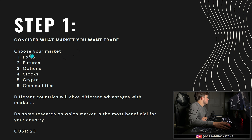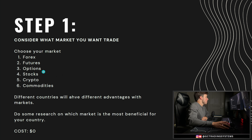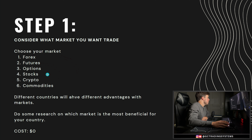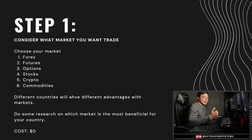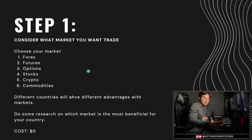There's a ton of different markets to choose from. You can choose Forex, futures, options, stocks, crypto, commodities, and there's a bunch more. One thing to note is that different countries will have different advantages with markets. If you are in the United States, you can pretty much trade all of these and be fine. But if you are trading out of India or something, you might only have access to Forex and commodities. So that's definitely something to consider depending on where you live. Do some research on which market is most beneficial for your country.